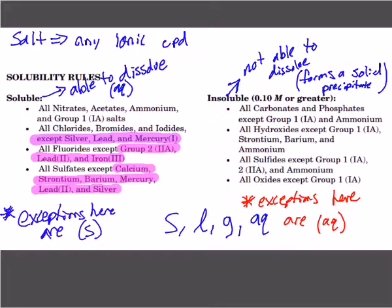On the flip side — the insoluble side — if something is insoluble, it'll be a solid precipitate. All carbonates and phosphates are going to be insoluble except when they're with group 1 or ammonium. You've seen a carbonate precipitate — you guys made one in this class: chalk. When you made chalk, it was a white solid precipitate, and you filtered it out. It was calcium carbonate. If it was sodium carbonate — that's group 1 — it would be soluble. But because it was calcium, it was insoluble.